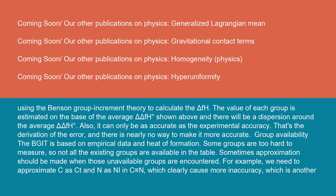Group availability: The BGIT is based on empirical data and heat of formation. Some groups are too hard to measure, so not all the existing groups are available in the table. Sometimes approximation should be made when those unavailable groups are encountered. For example, we need to approximate C≡ as C≡T and N≡ as N≡I, and C≡ is identical to N≡, which clearly causes more inaccuracy, which is another drawback.